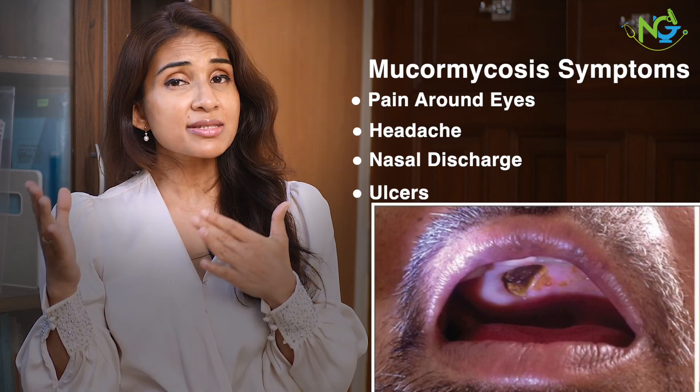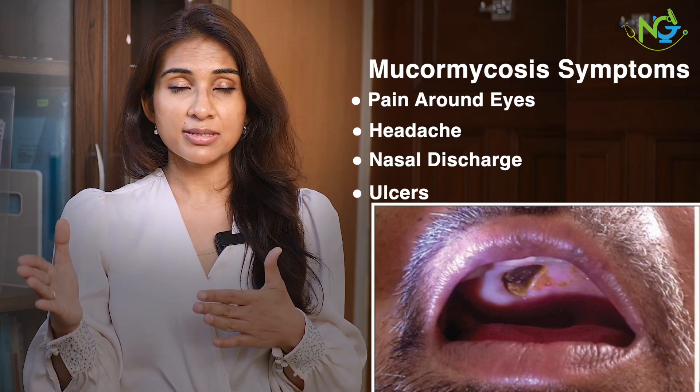These can be initial red signs for mucormycosis. Some people may have cough, and there can be blood in the cough — this can be a sign of pulmonary mucormycosis. If there is abdominal distention or blood-stained diarrhea, this can be because of gastrointestinal mucor. After injuries or burns, secondary fungal infections with mucor are also very common.